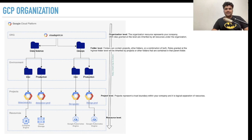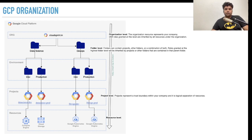The organization is the first resource, which represents your company. Any IAM role granted at this level is inherited by all resources under the organization. The second is the folder layer. Folders can contain projects, other folders, or a combination of both. Roles granted at the highest folder level will be inherited by projects and other folders contained in the parent folder. For example, if you apply any permission on a DevOps folder, it will be applied to both the dev and production folders and all projects within them.